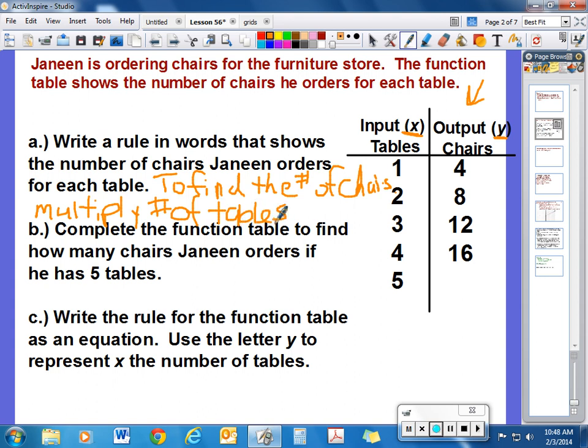Multiply the number of tables by four. So again, we just take the number of tables and multiply it by four. That will tell us how many chairs we need. Pretty understandable, right?